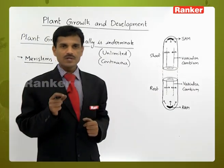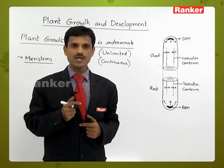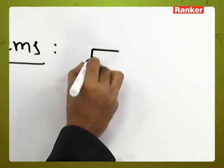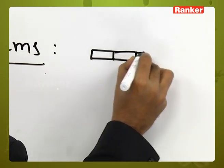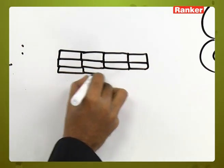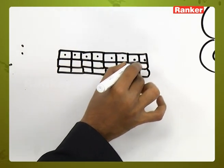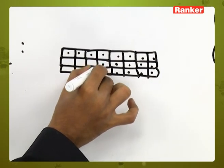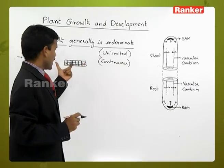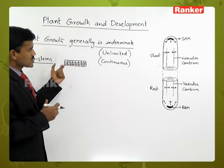Meristems generally have a number of small cells. These small cells have the ability to produce new cells always, so they undergo cell division. The meristematic tissue cells are very small, compactly arranged, with no intercellular spaces. A conspicuous nucleus is present, along with dense cytoplasm and a thin cell wall. These are the characteristic features of meristems. They undergo repeated divisions, and this type of meristem is present in different locations.